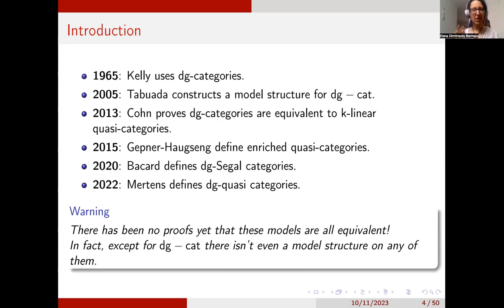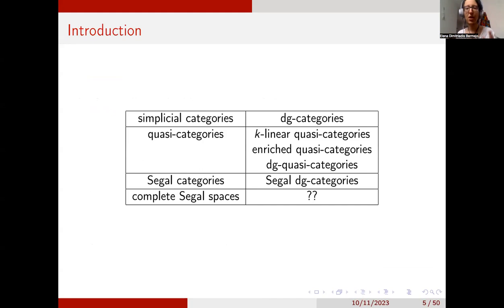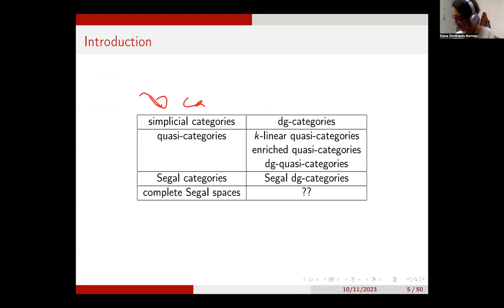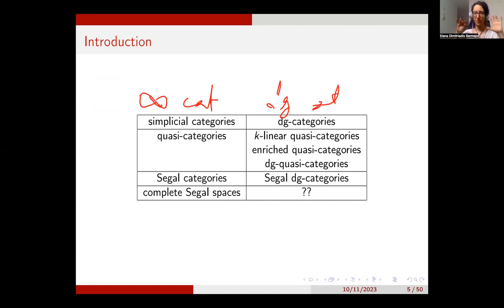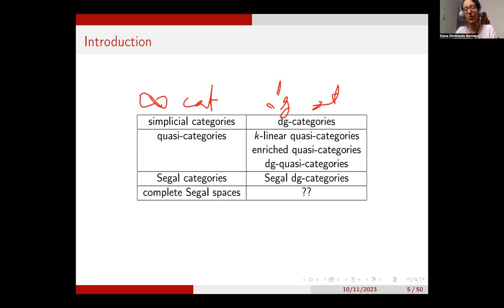If we have been following this far, we can make a comparison between the infinity categorical setting and the DG categorical setting. If we consider simplicial categories to be the philosophical equivalent of DG categories, we have versions of quasi-categories in k-linear quasi-categories, enriched quasi-categories, or DG quasi-categories, and we have a version of Segal categories in DG-Segal categories. But we don't have any version of complete Segal spaces. And that is where my work is going to be — I am going to try and fill this empty space.